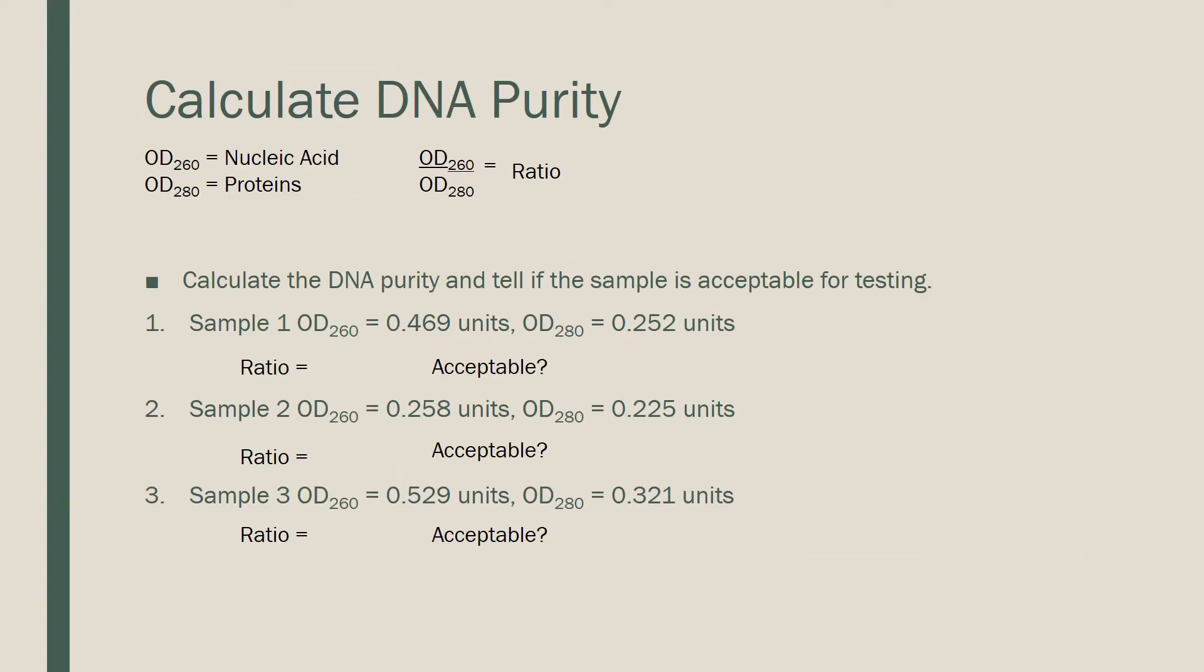First, let's work some examples determining DNA purity. Remember the OD260 measures nucleic acid and OD280 measures your proteins. We take the ratio of these to determine your purity.